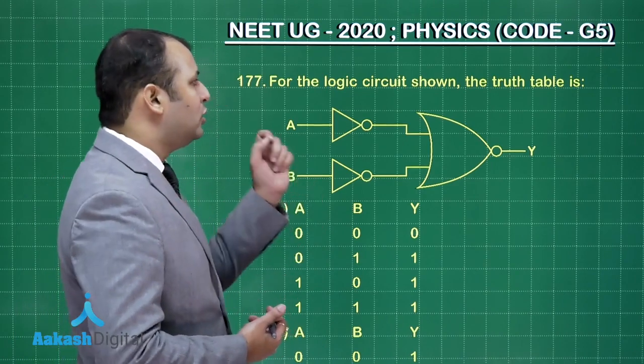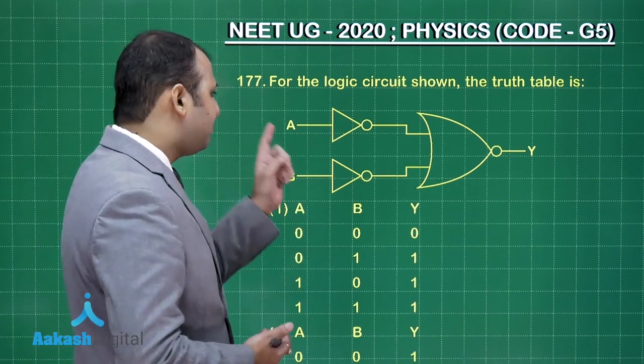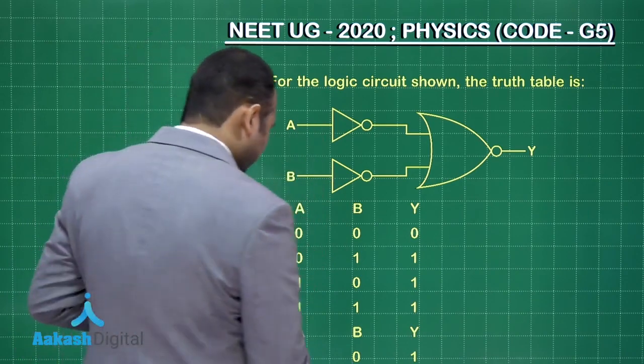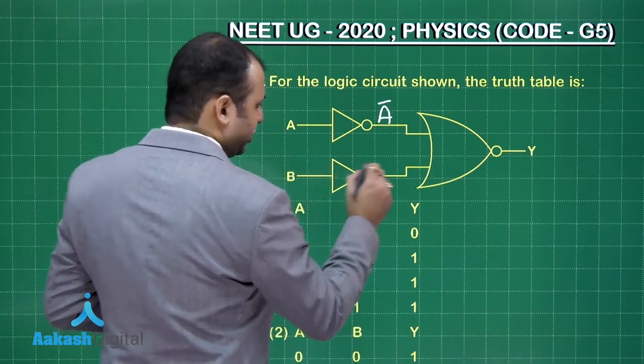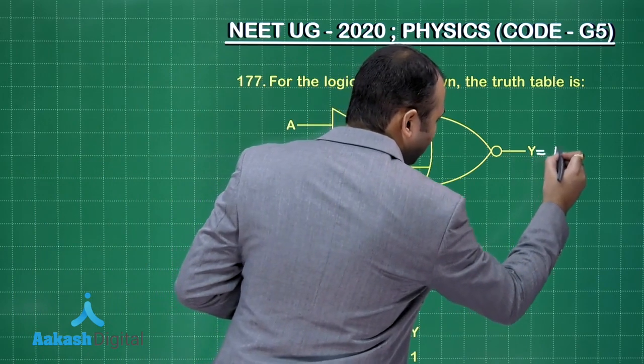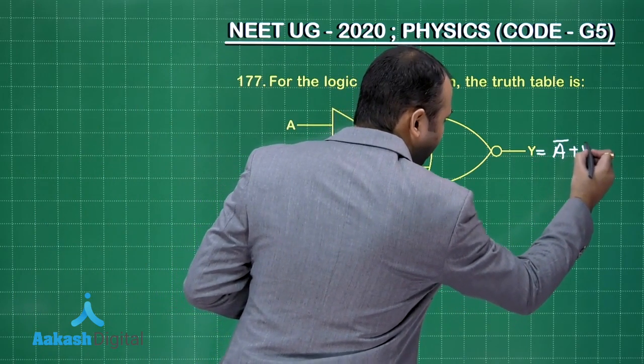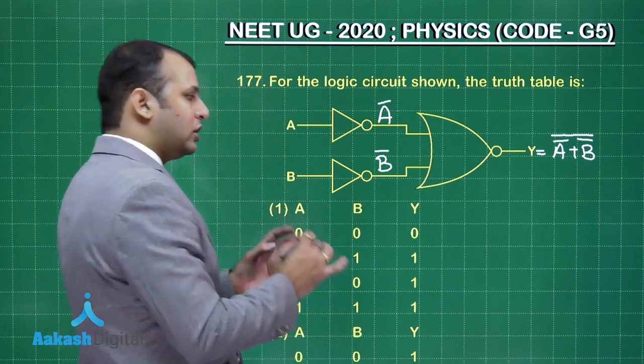In this question, the logic circuit is this. We have to find the truth table. So for the input A, this is NOT gate, so what we will get here is A bar. Similarly this is B, this is NOT gate here, this is B bar. This is NOR gate, so the output will be A bar plus B bar. So this is NOT gate here.